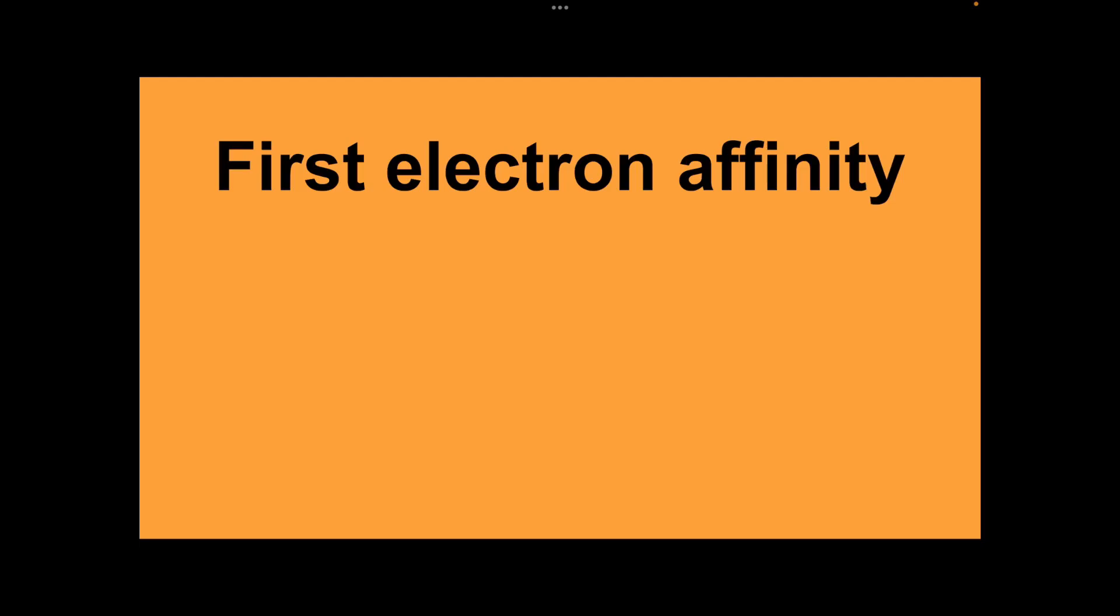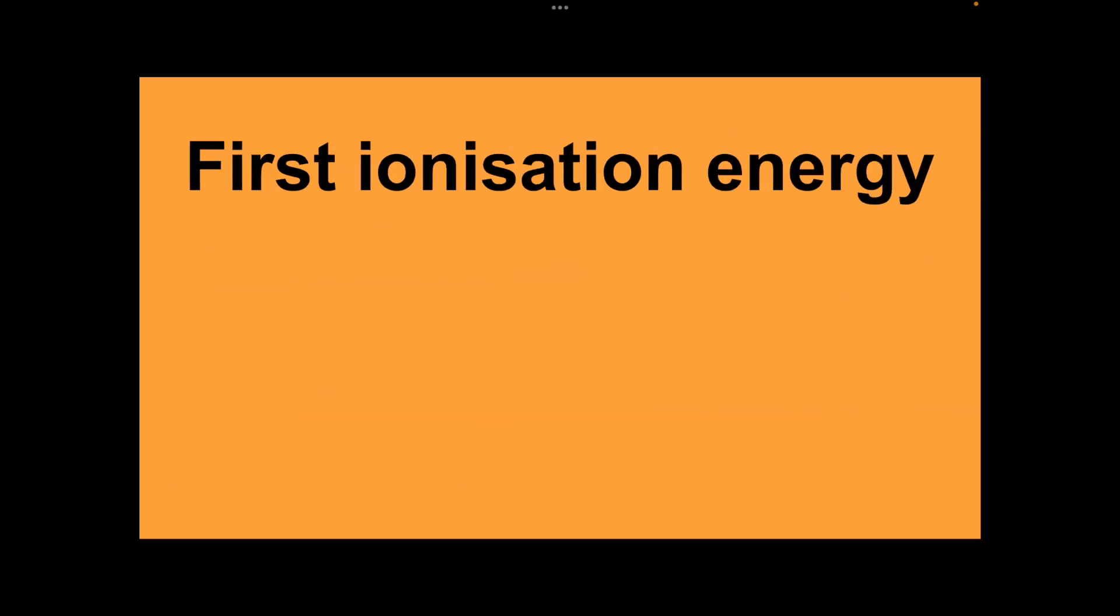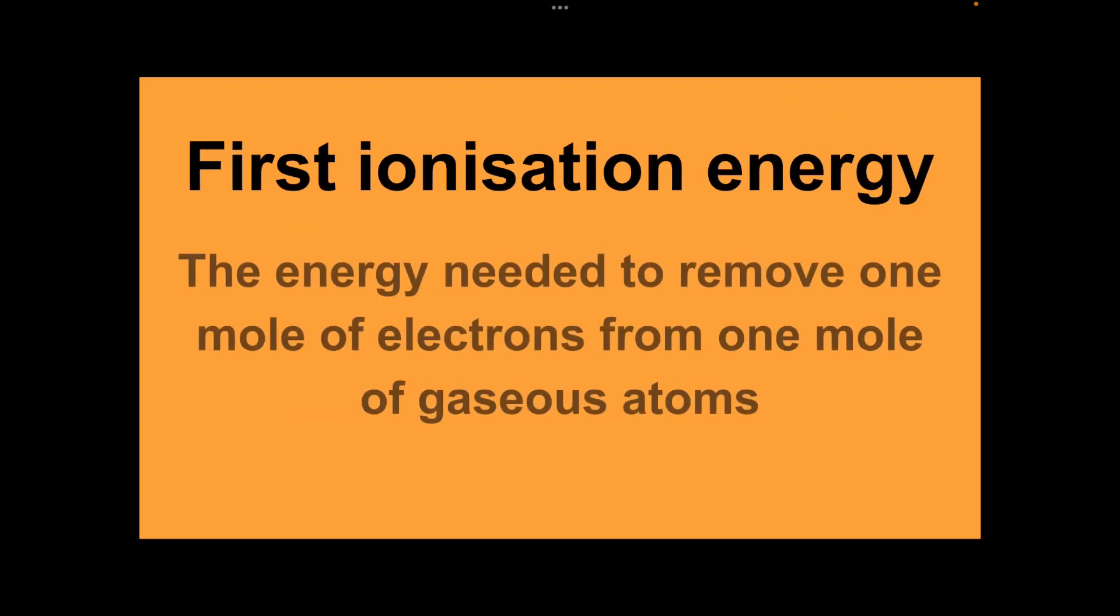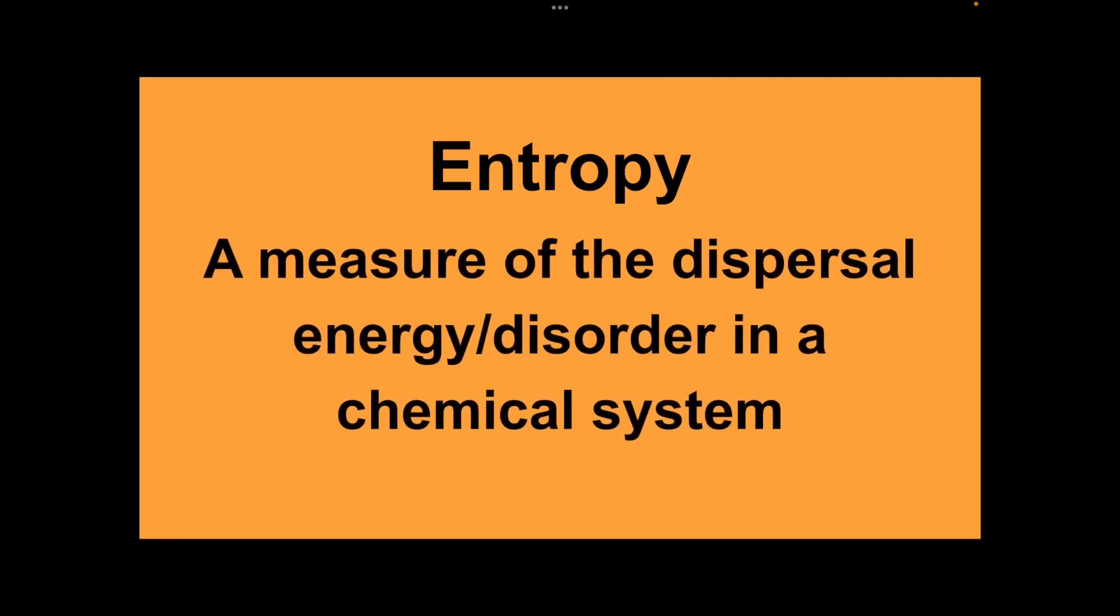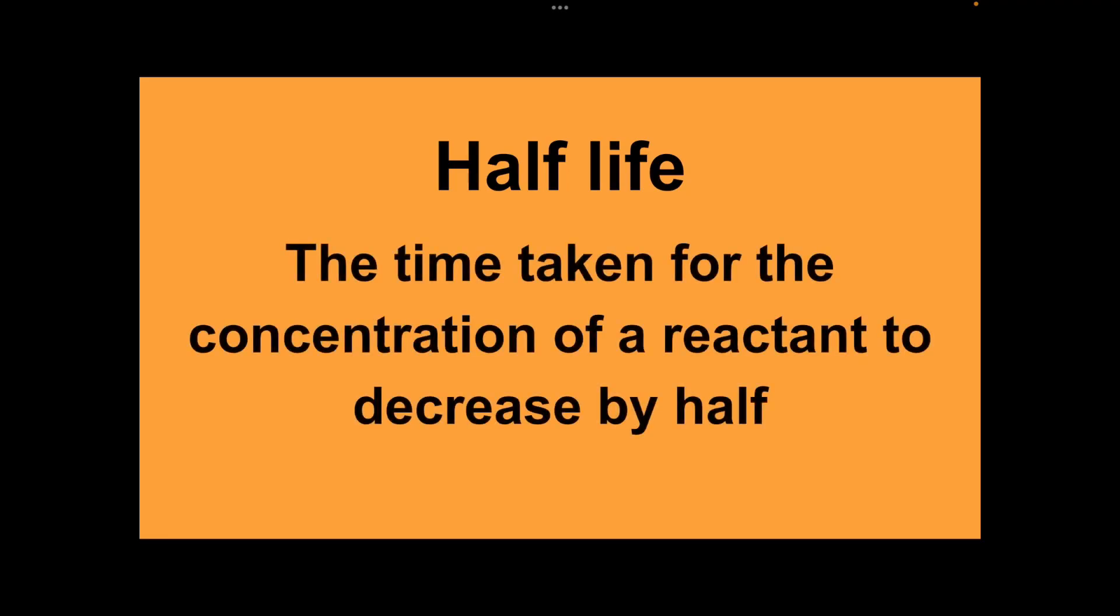First electron affinity: the enthalpy change when one mole of electrons is added to one mole of gaseous atoms. First ionization energy: the energy needed to remove one mole of electrons from one mole of gaseous atoms. Entropy: a measure of the dispersal of energy or disorder in a chemical system. Half-life: the time taken for the concentration of a reactant to decrease by half.